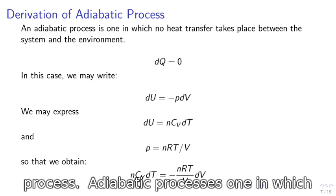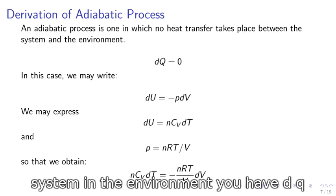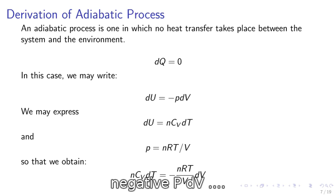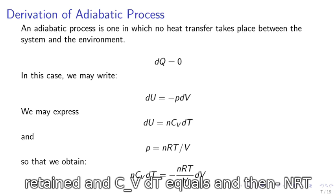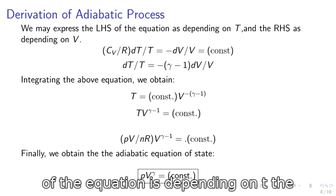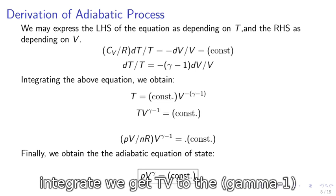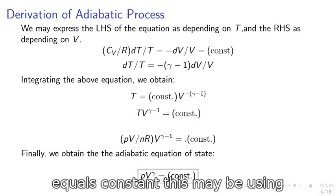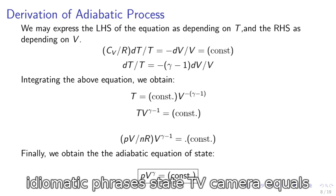Derivation of an adiabatic process. An adiabatic process is one in which no heat transfer takes place between the system and the environment, so we would have DQ equals 0. In this case, we may write DU equals negative PDV. We may express DU equals NCVDT and P equals NRT over V, so that we obtain NCVDT equals negative NRT over VDV. We may express the left-hand side of the equation as depending on T and the right-hand side as depending on V. So when we integrate, we get TV to the gamma minus 1 equals constant. Using the ideal gas law, we may obtain the adiabatic equation of state PV gamma equals constant.